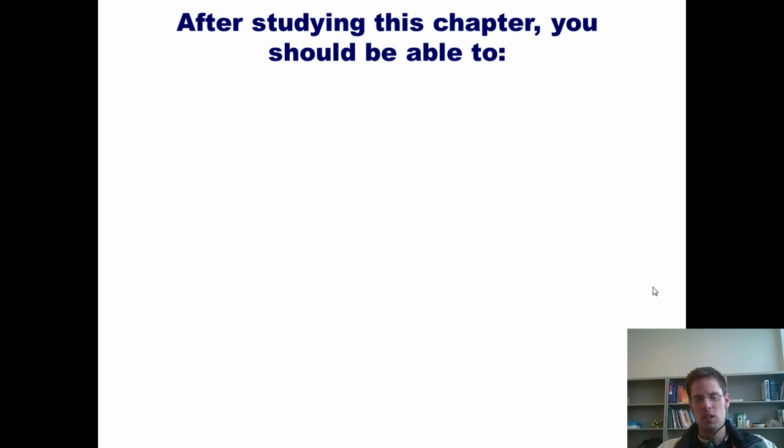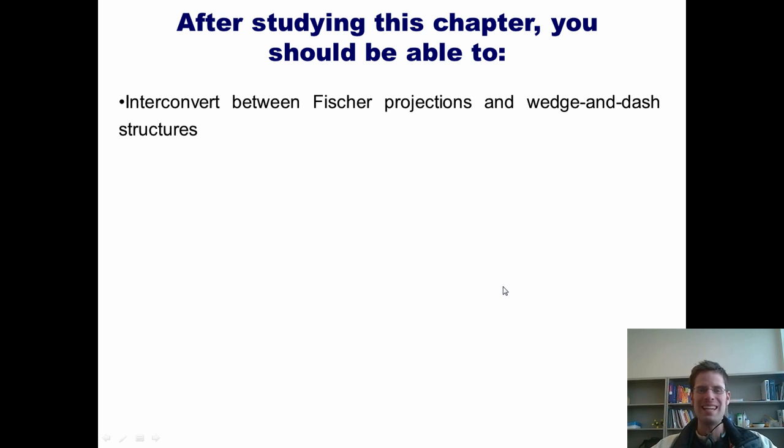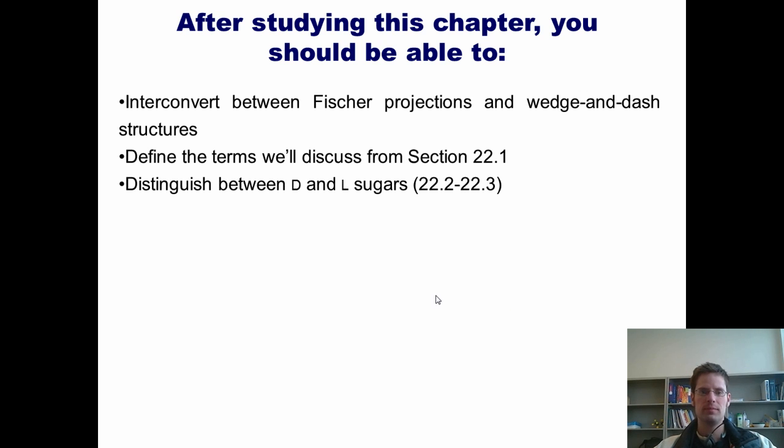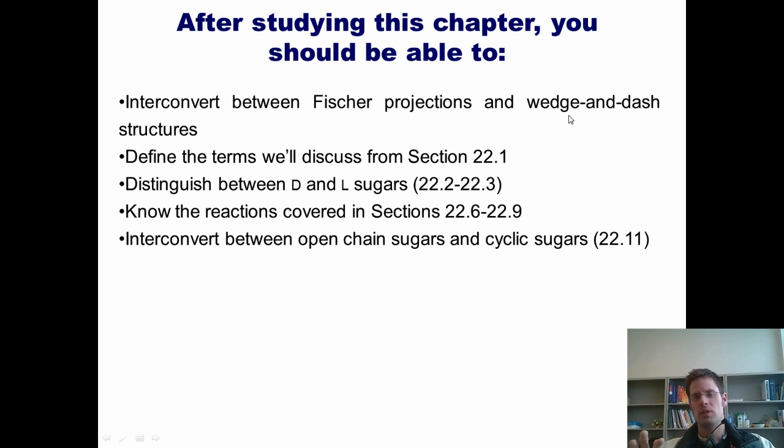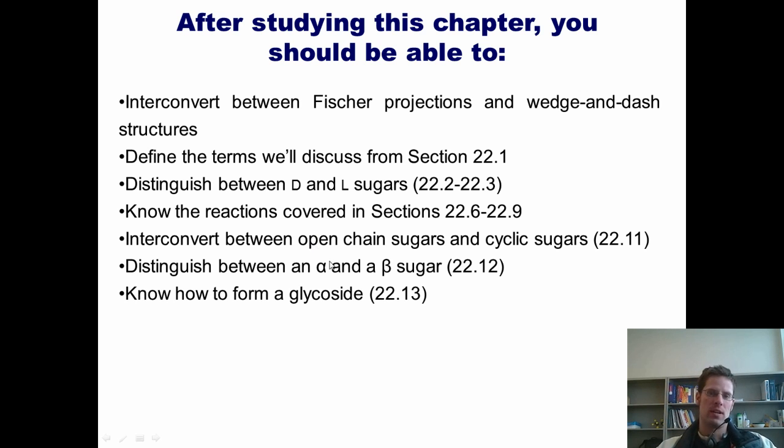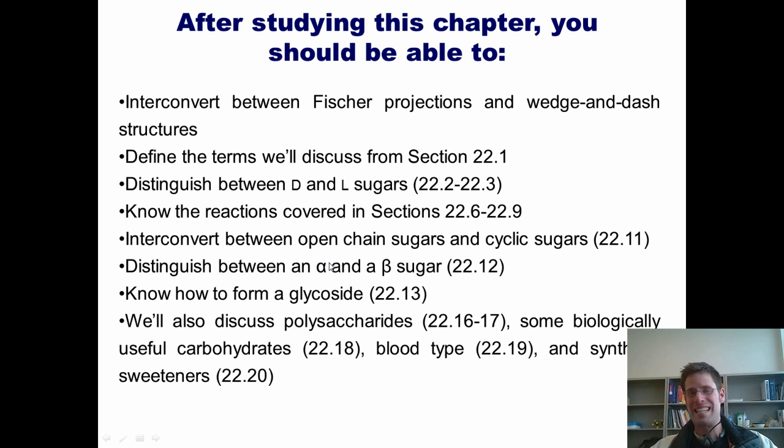By the time we finish this chapter, I'll expect you to be able to do the following: 1. Interconvert between Fischer projections and wedge and dash structures. 2. Define the terms we'll discuss in section 1. 3. Distinguish between D and L sugars. 4. Know the reactions covered in sections 6 through 9. 5. Interconvert between open sugars and cyclic sugars. 6. Distinguish between an alpha and a beta sugar. 7. Know how to form a glycoside. We'll also discuss polysaccharides, some biologically useful carbohydrates, blood types, and synthetic sweeteners. And just so you know, we'll be skipping sections 10, 14, and 15.